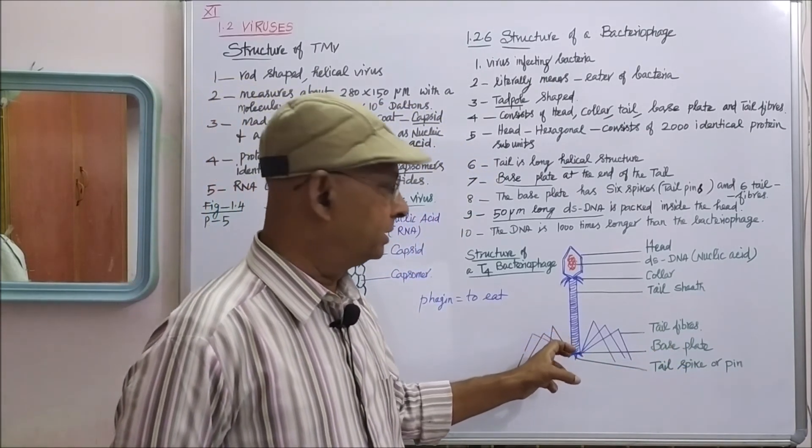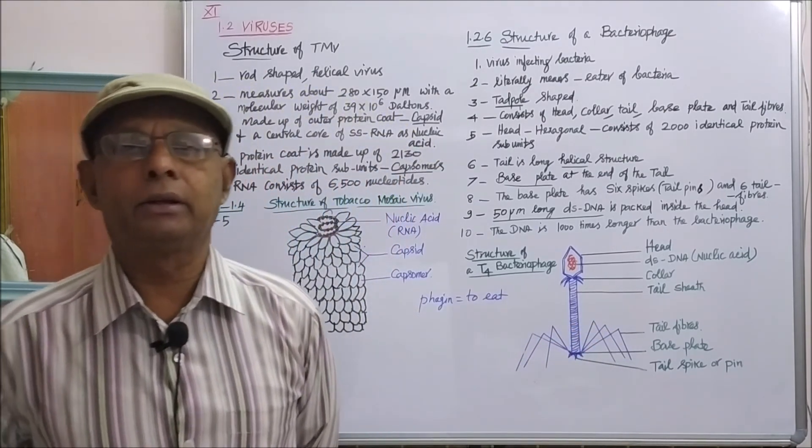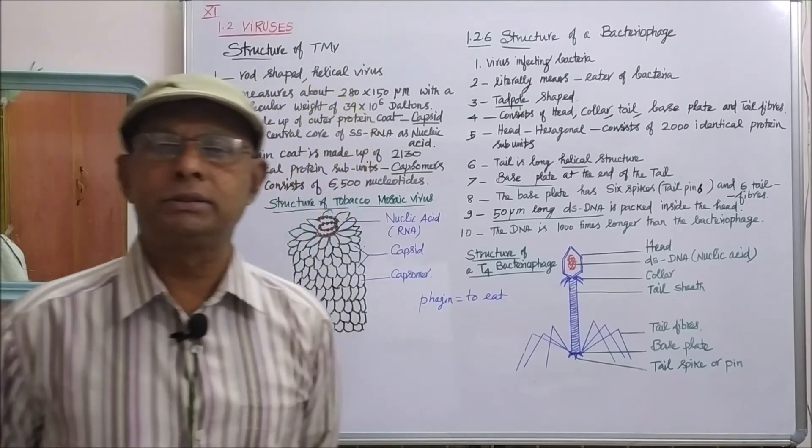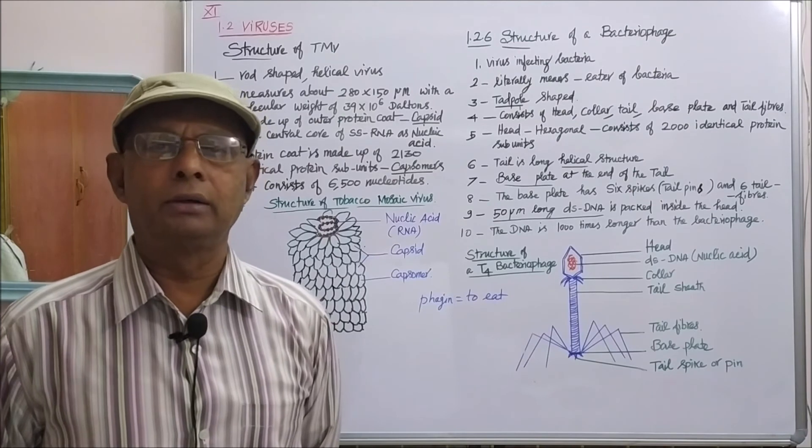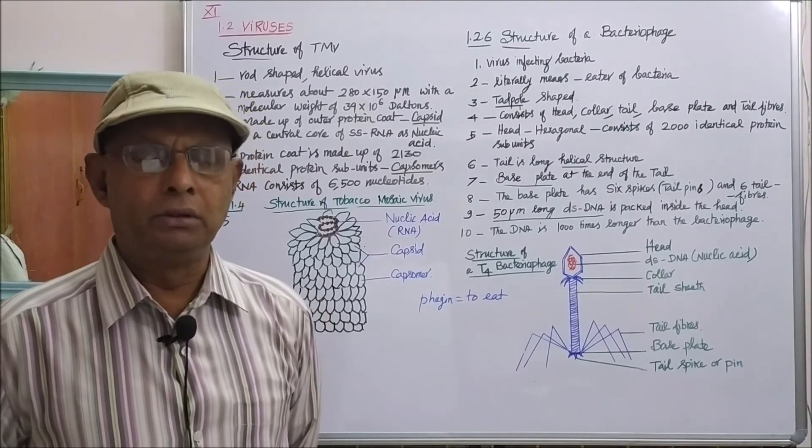With the basal plate, six long tail fibers are connected. These tail fibers are used to attach the phage on the cell wall of the bacterial cell during replication.